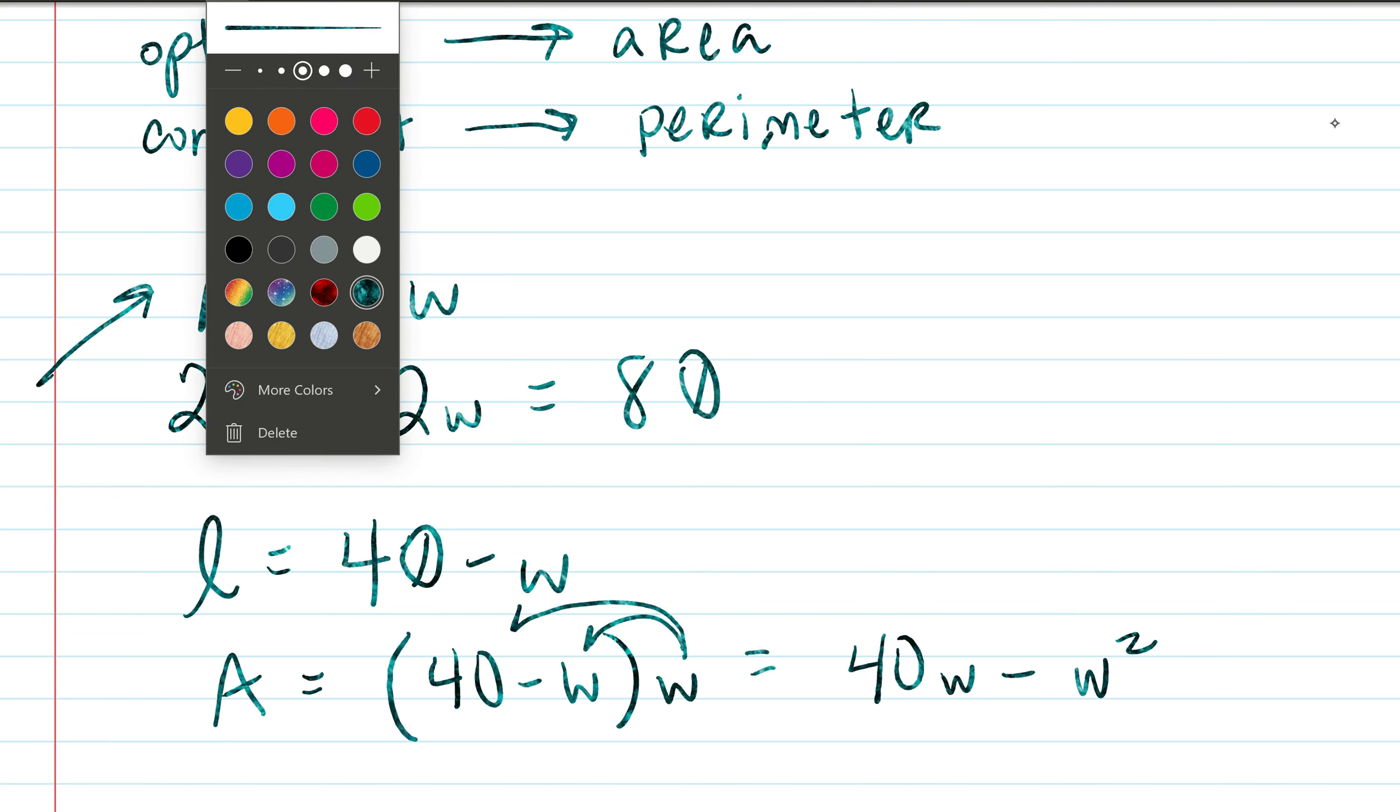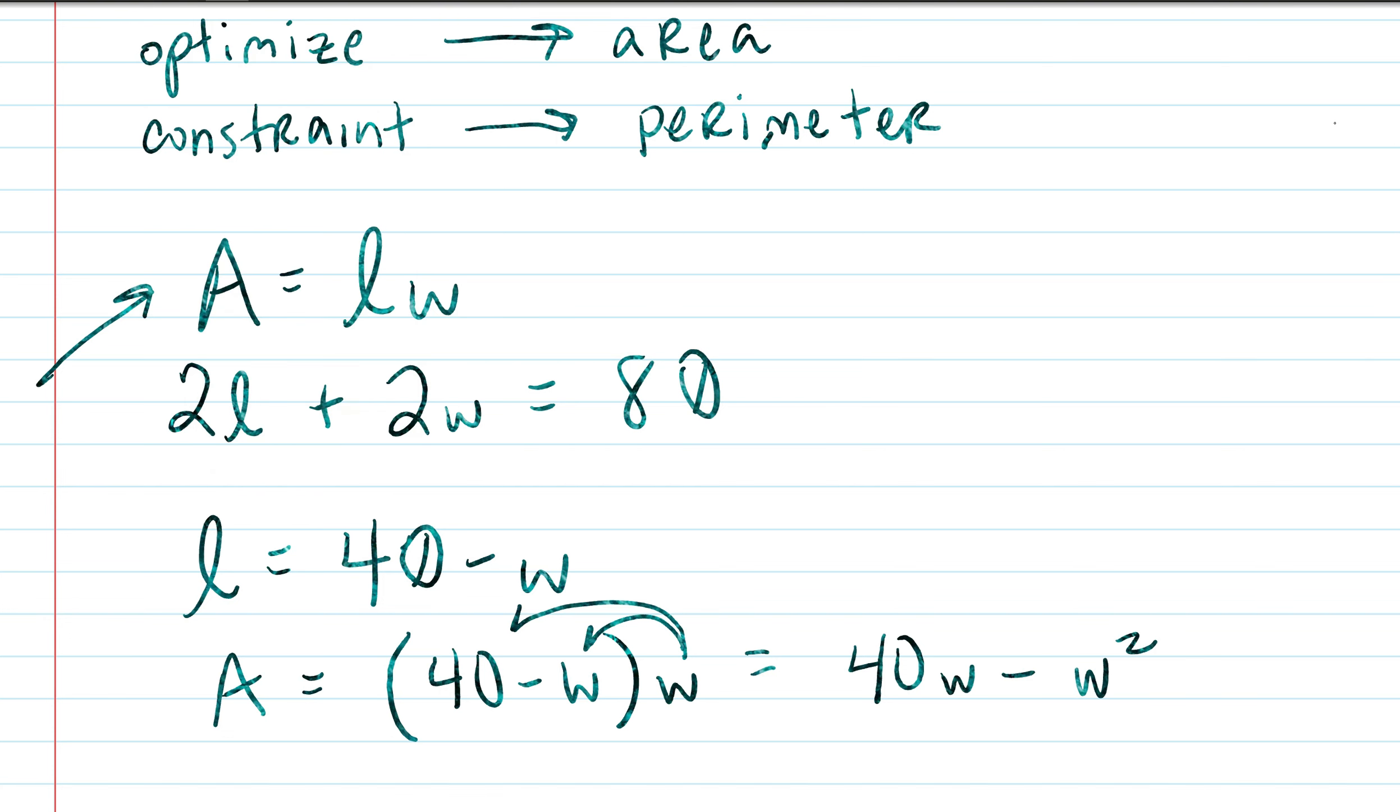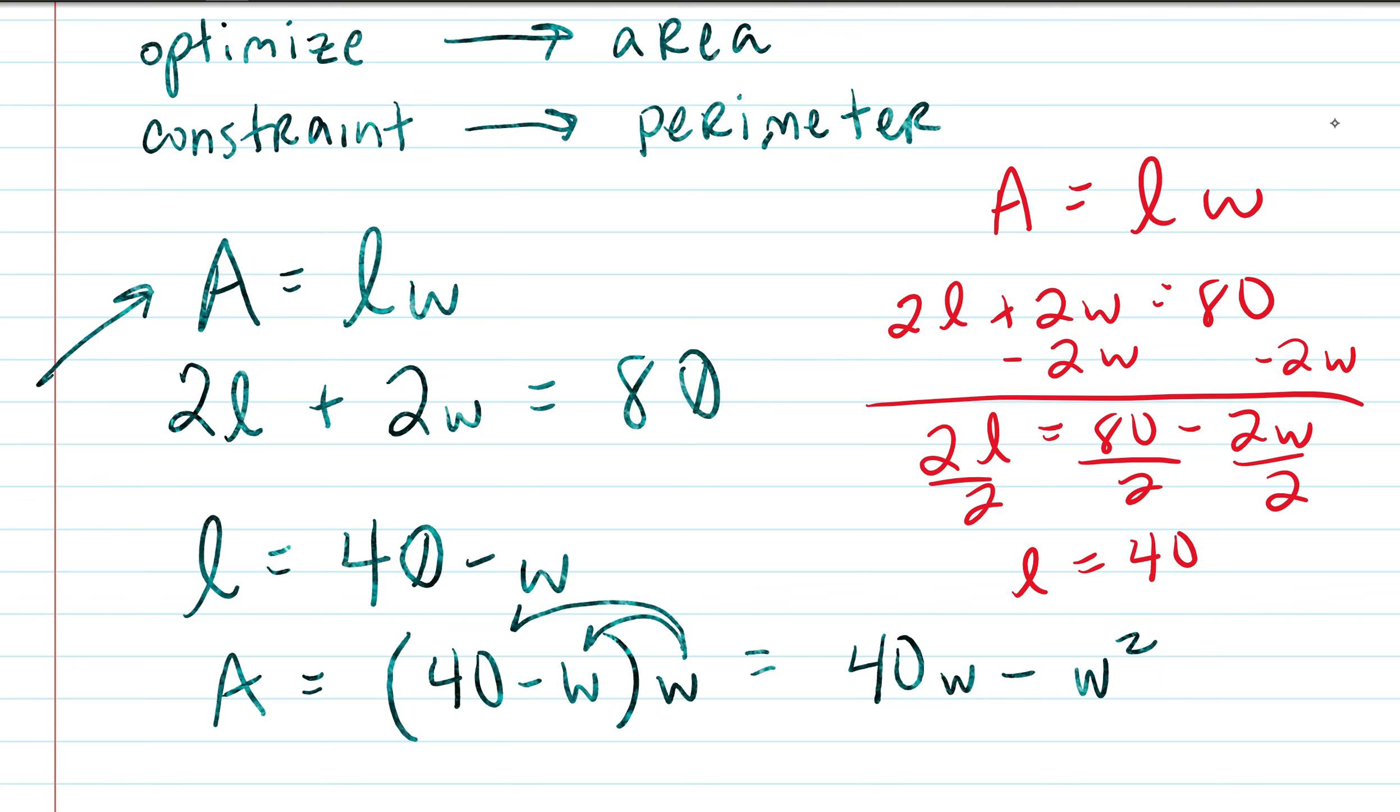Let's break this down a little bit further and understand how we got that l equals 40 minus w. If we have A equals length times width, and down below it we have 2l plus 2w equals 80. Well, if I solve for 2l, I'll subtract 2w from both sides. Then we get 2l equals 80 minus 2w, dividing everything by 2. Then I get l equals 80 divided by 2 is 40 minus w. That's how we got that.